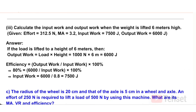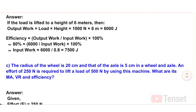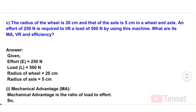iii) Calculate input work and output work when the load is lifted 6 meters high. Output work = Load × height = 1000 N × 6 m = 6000 J. Using efficiency: 80% = (6000 / Input work) × 100 → Input work = 6000 / 0.8 = 7500 J.